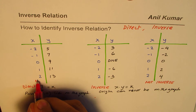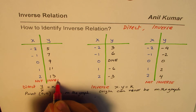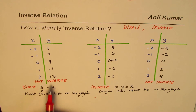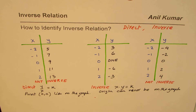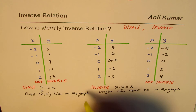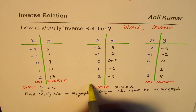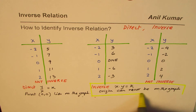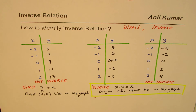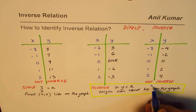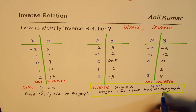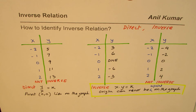If any table gives you a zero in the X column with a corresponding zero in Y, it can never be inverse — that is very important. For inverse relation, the origin can never be a point on the graph. So we rule out those tables and only need to test one of them.